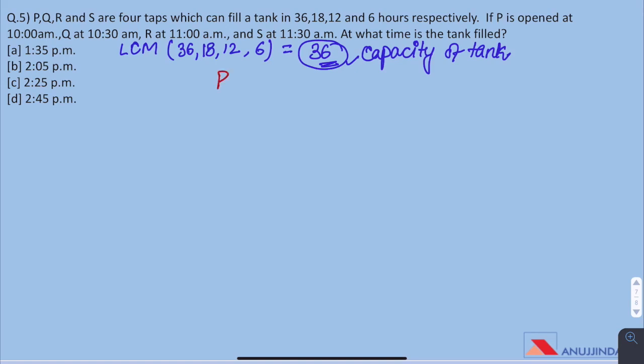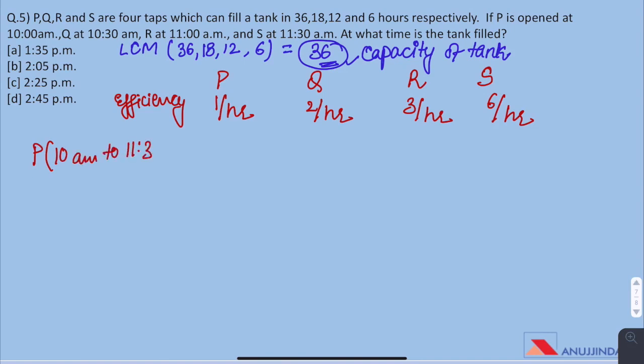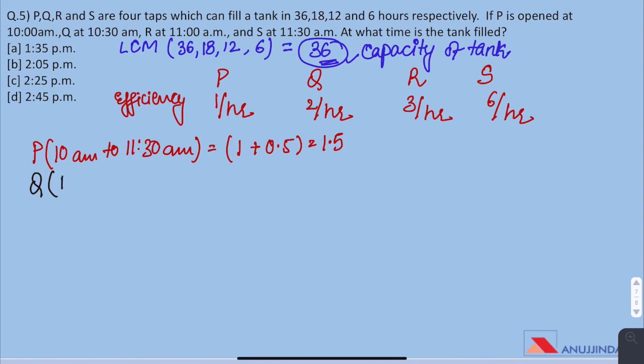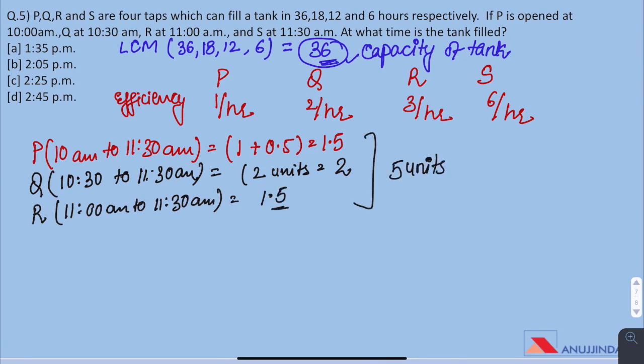Now, we have to find the work done by each tap per hour. P, Q, R and S. For P, it would be 36 by 36 which is 1 unit per hour. For Q, it would be 36 by 18 which is 2 units per hour. For R, it is 36 by 12 which is 3 units per hour. For S, it would be 36 by 6 which is 6 units per hour. As per the question, P is opened at 10 am. So, the work done by P from 10 am to 11.30 am would be 1 unit plus 0.5 unit which is 1.5 units. Similarly, the work done by Q which is opened at 10.30 am to 11.30 am would be 2 units. For R which is opened at 11 am to 11.30 am it would be 1.5 units. So, total 5 unit work has been done till 11.30 am before the tap S has been opened.